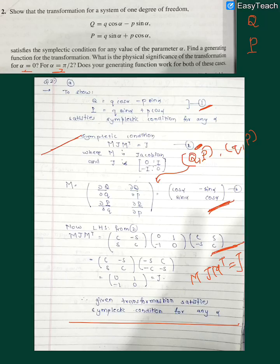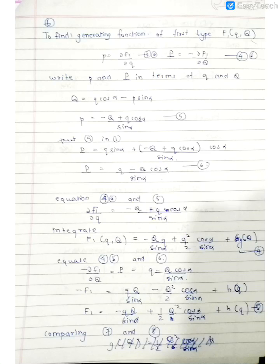Since we have not specified any constraints over alpha, this condition is satisfied for any general alpha. So we have done with the first part. Now we have to find the generating function for the transformation. We move to the second part. In Goldstein you will see a table where there are four kinds of generating functions.